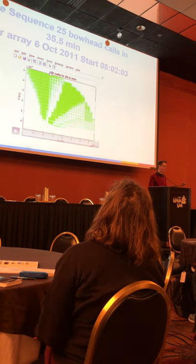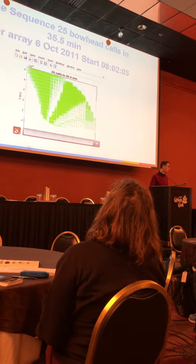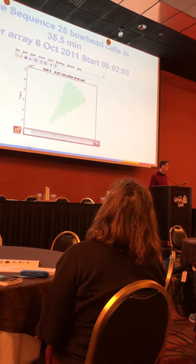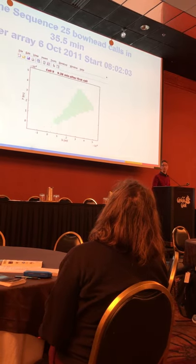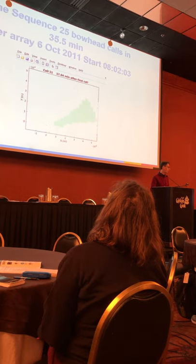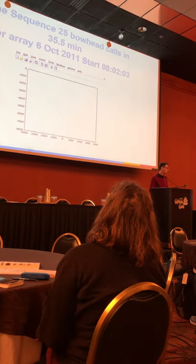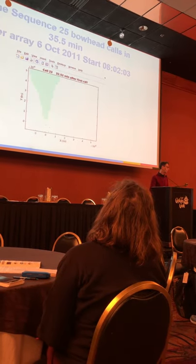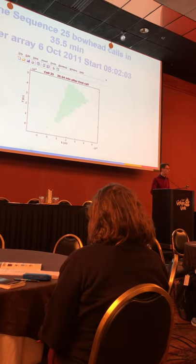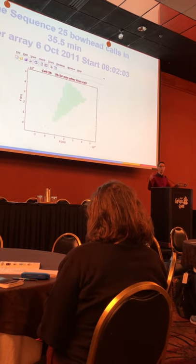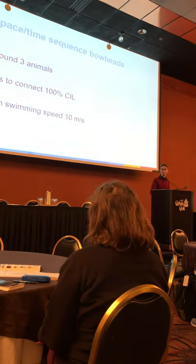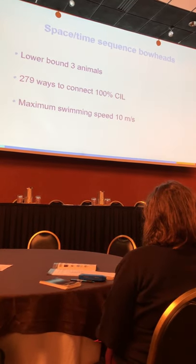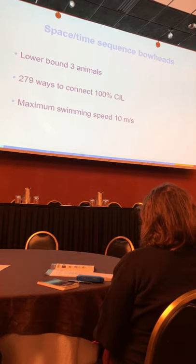Now I'm going to show you 25 bowhead calls that occurred in a 35-minute period, shown in a sped-up time sequence. You'll see each of their confidence intervals, with the five receivers displayed. What's the fewest number of animals that could explain that? You have to put that into a program and figure out the fewest number of whales that could explain those data in space and time. The answer is three — it could have been as few as three animals. So we know there were between three and twenty-five animals. That's a reliable number — it's something that's real.